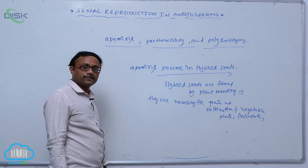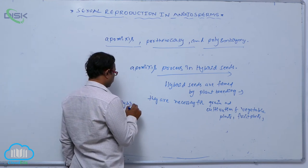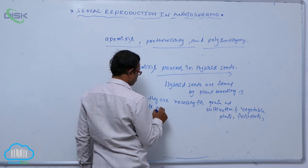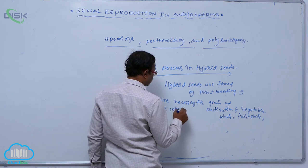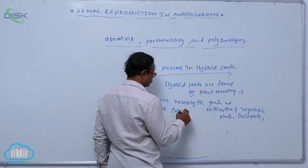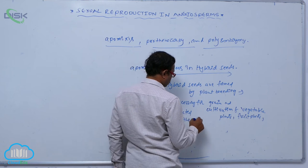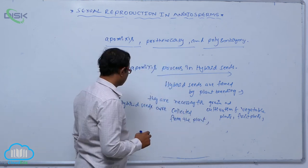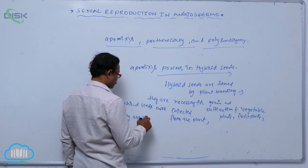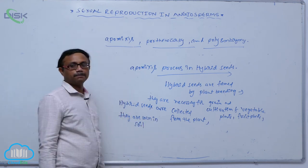For example, if hybrid seeds are sown in that soil, if hybrid seeds are collected from the plants and they are sown in soil, they do not produce similar type of hybrids.